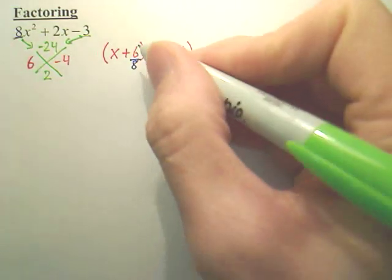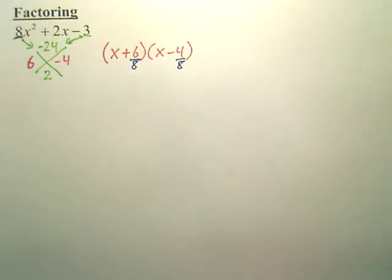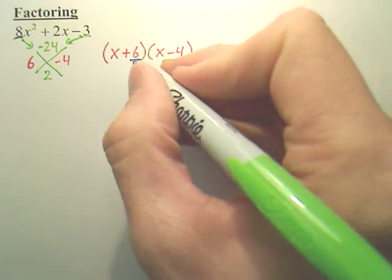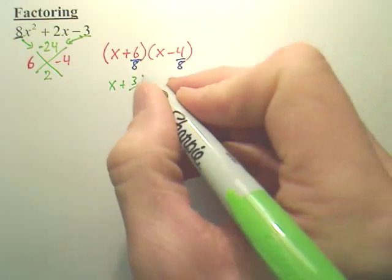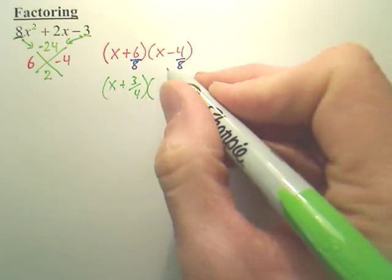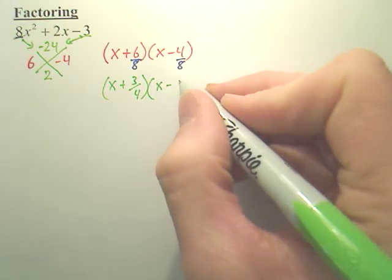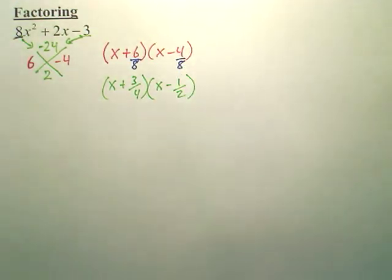So you get 6 over 8, which 6 over 8 is 3 fourths. And for this one, you get x minus 1 half. 4 over 8 is 1 half.